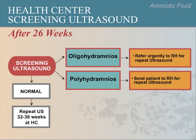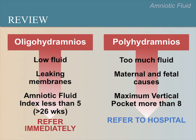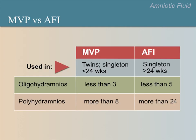Now let's review the key points from this lecture. Oligohydramnios means having low fluid and may be caused by leaking membranes. In oligohydramnios, the amniotic fluid index is less than 5, and this should trigger immediate referral after 26 weeks. Polyhydramnios means having too much fluid and can be caused by maternal diabetes or fetal conditions. The maximum vertical pocket is 8 centimeters or greater for polyhydramnios, and the patient should also be referred to the hospital after 26 weeks.